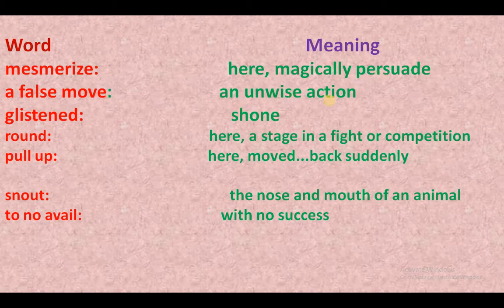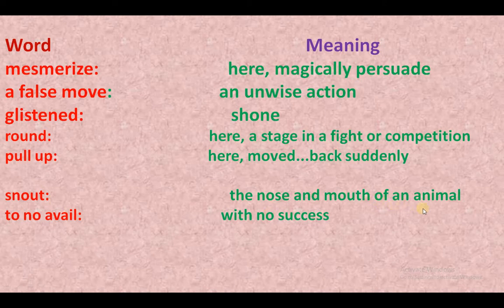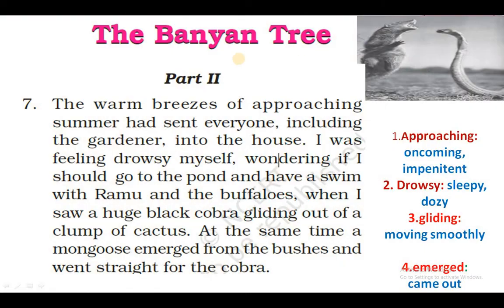A false move — an unwise action; galat action lena. Glazed — shining; chamakna. Round — here, a stage in a fight or competition. Pull up — here, moved back suddenly; achanak se mudna. Snout — the nose and mouth of an animal. To no avail — with no success; safal taak na milna.